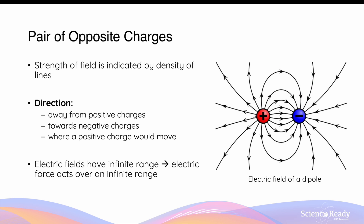The way we draw electric field lines is the same when we place two charges side by side. The field lines go away from the positive charge and towards the negative charge, extending radially away from the positive and radially towards the negative. The strength of the field is again indicated by the density of field lines — closer together means stronger, further apart means weaker.